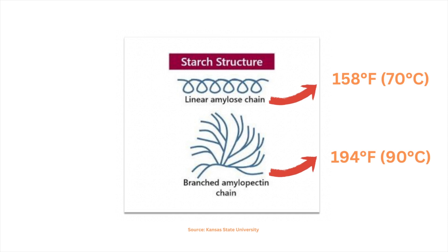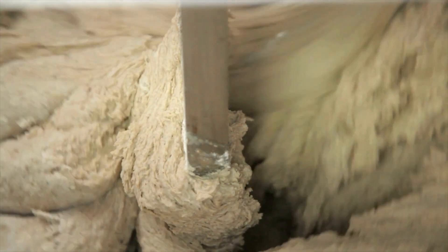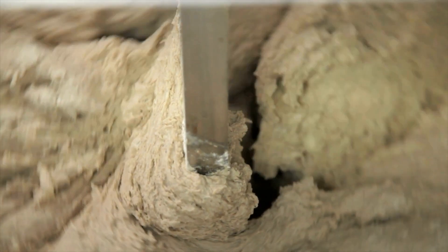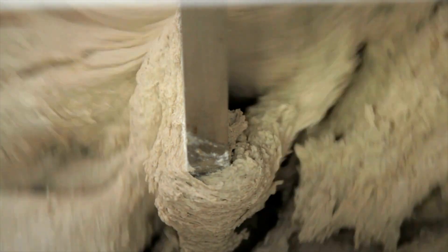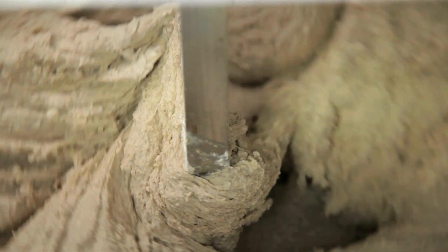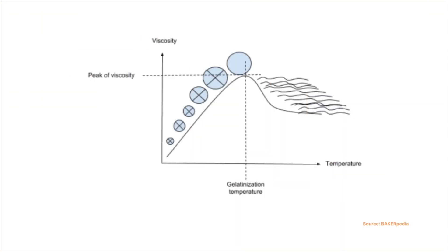The amylose and amylopectin fractions start to solubilize at 158°F (70°C) and 194°F (90°C) respectively. These fractions become loose and eventually become more reactive and prone to enzyme attack, especially amylases. This image shows the mode of starch granule swelling and loss of birefringence.